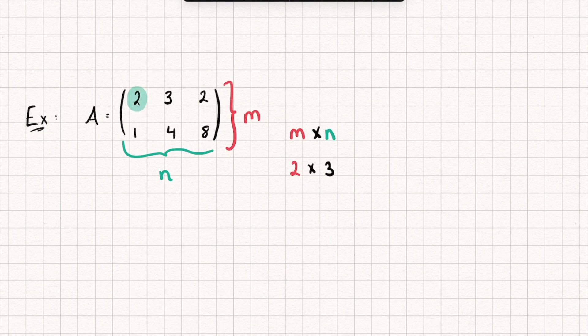We can describe a specific element in the matrix. Say we want to describe this two here. The matrix is capital A, so I'll call the elements lowercase a. This is in the first row and the first column, so this element is a₁₁ equals two. Let's describe another one, this eight. Which row is it in? The second row. And which column? The third column. So we've described the element a₂₃ equals eight.